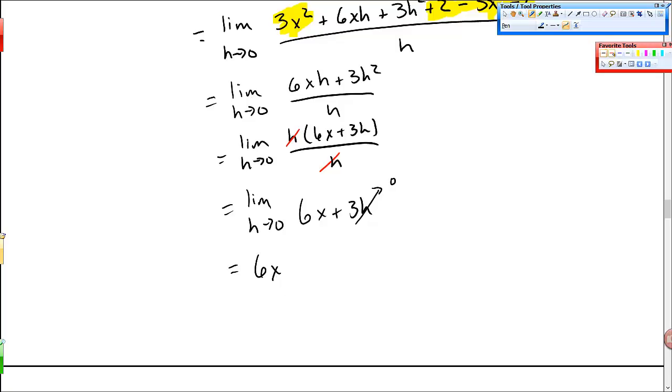This is the derivative, also the slope of the tangent line, also the instantaneous rate of change. And if I wanted to find f prime of 1, I'd just take 1 and plug it in to 6x. So I get 6 times 1 is equal to 6.